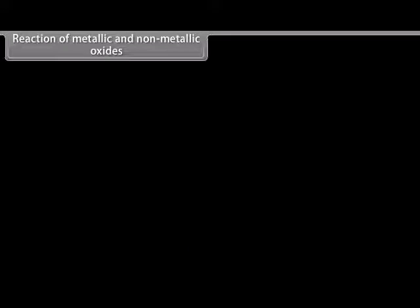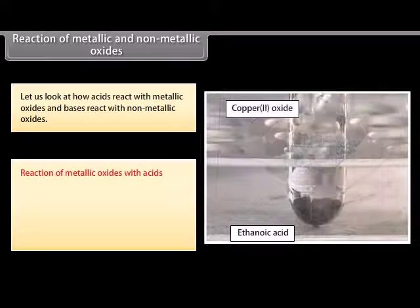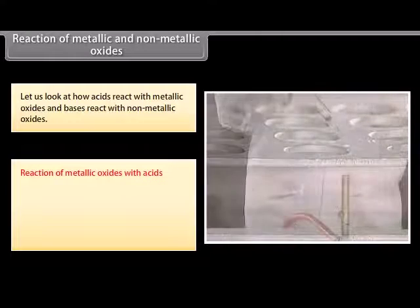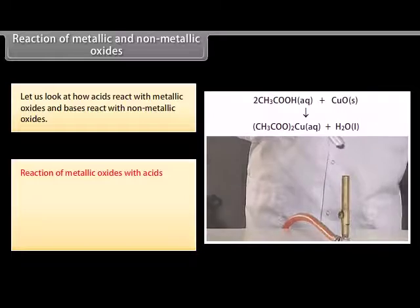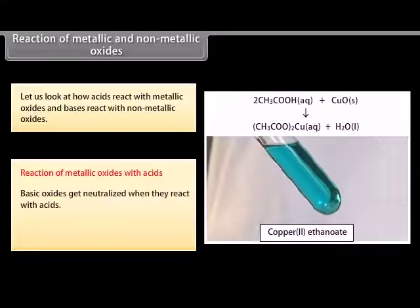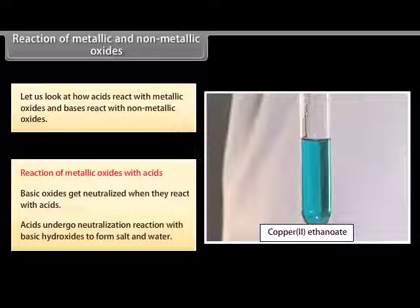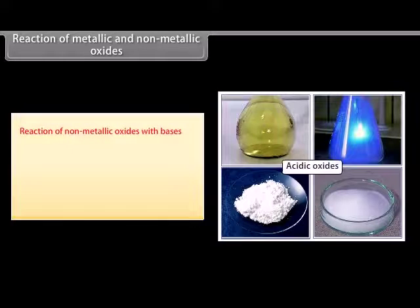Now that you have seen how acids and bases react with metals, hydrogen carbonates, and with each other, let us look at how acids react with metallic oxides. Oxides that add on hydroxyl ions to their molecules are called basic oxides. These oxides get neutralized when they react with acids. Acids undergo neutralization reaction with basic hydroxides to form salt and water.